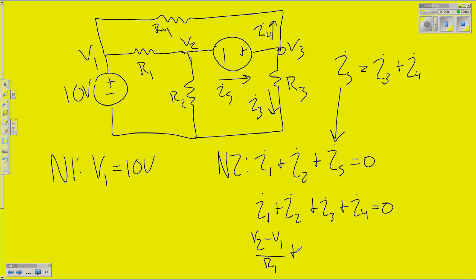I2 is just going to be V2 over R2. I3, then, is V3 over R3. And I4, V3 minus V1, all over 10, equals 0. Now we've got an equation in terms of both V2, V1, and V3.